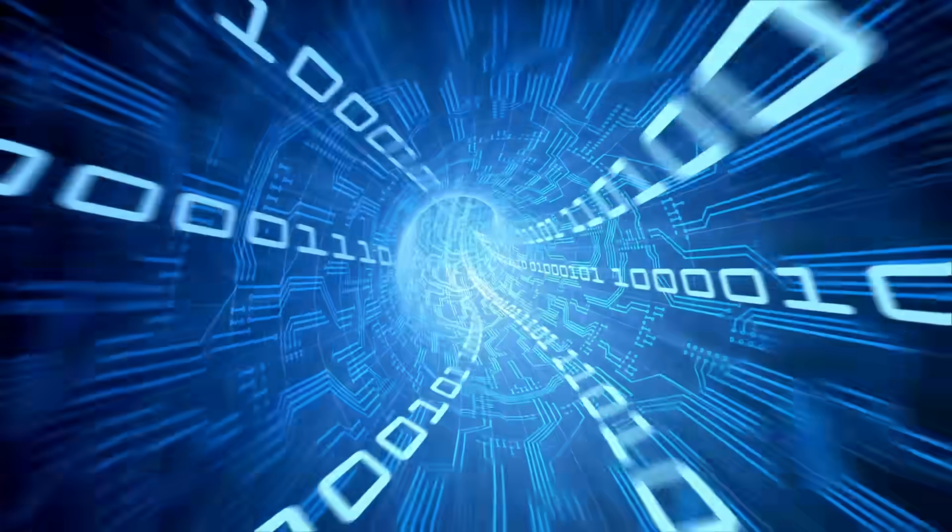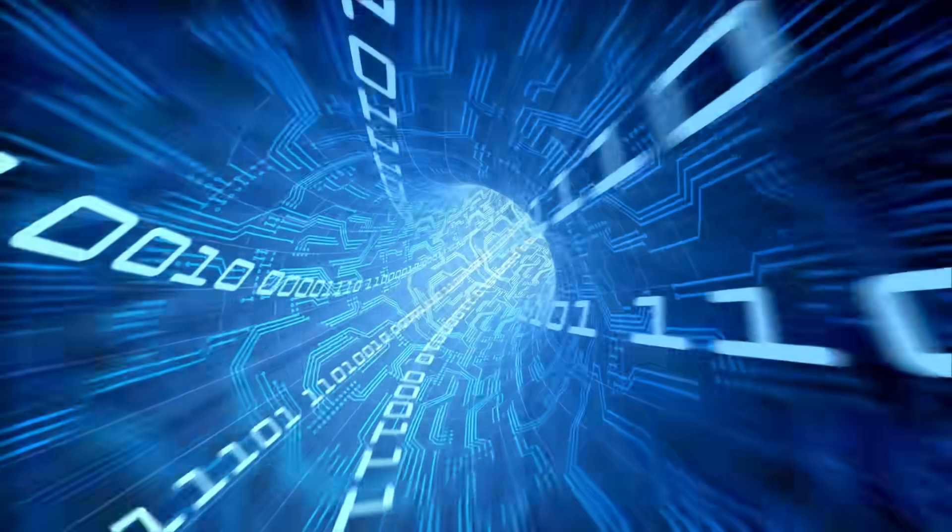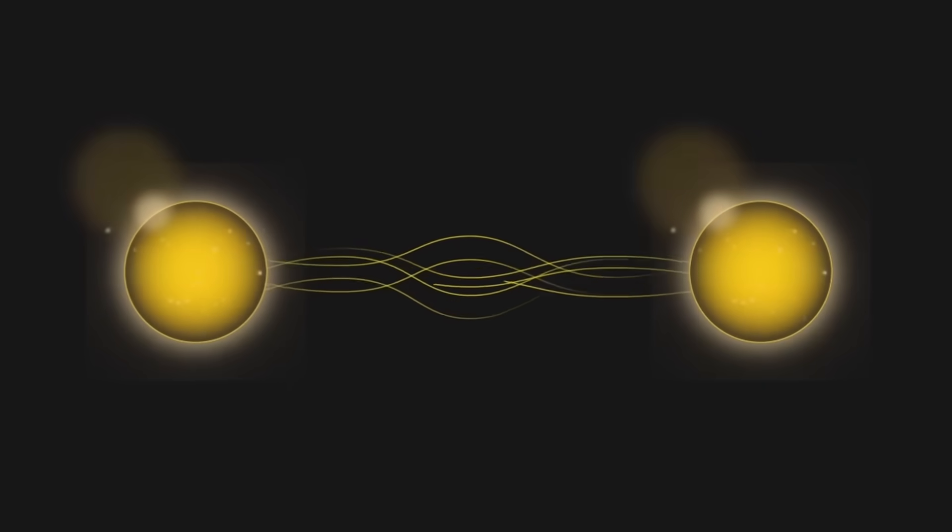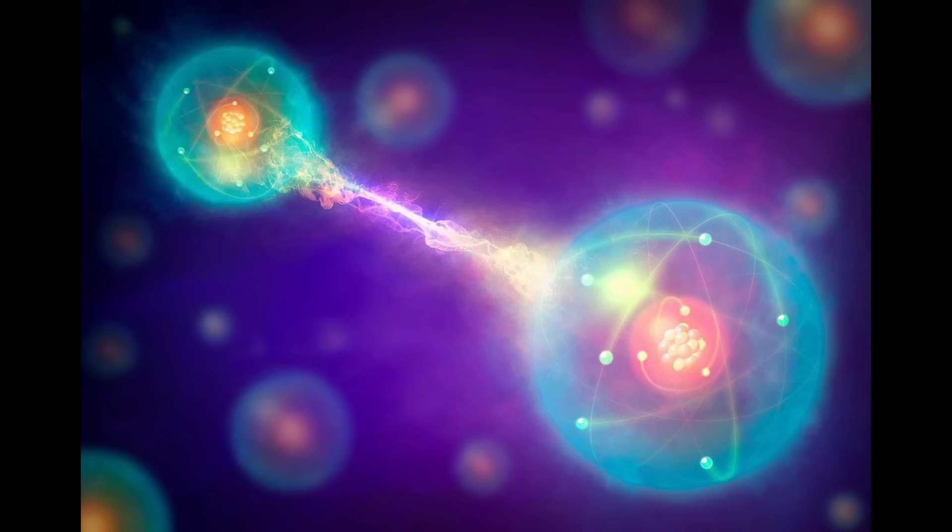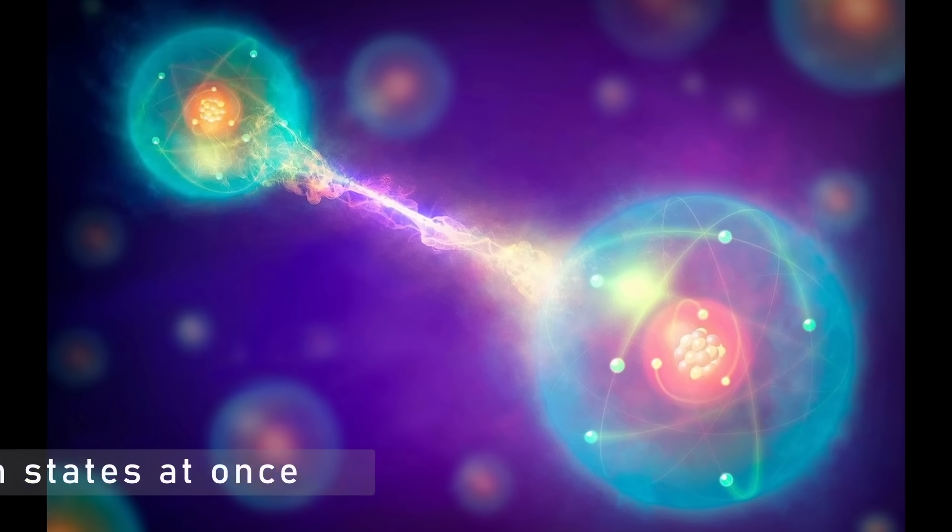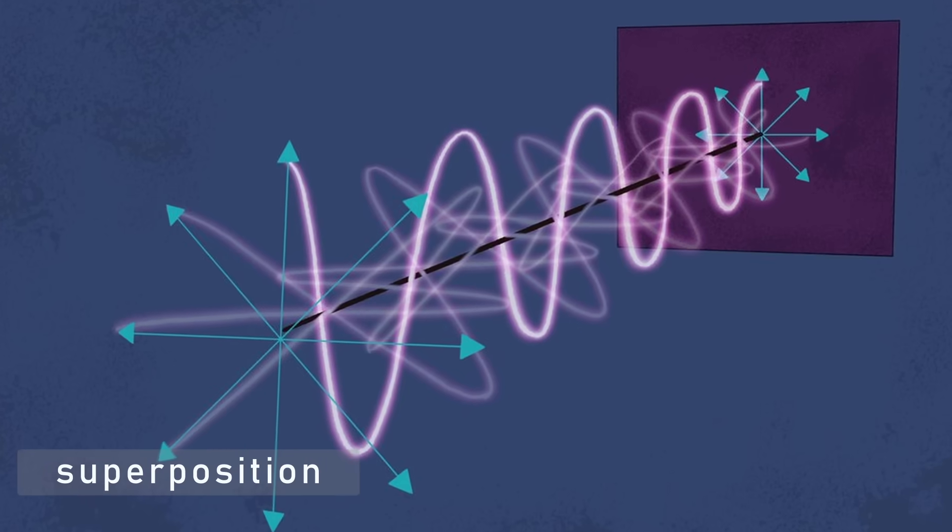In the lowest state, it can represent a zero, in the next, a one. But here's where quantum reality gets weird. The wave doesn't have to choose between them. It can exist in both states at once, a phenomenon called superposition.